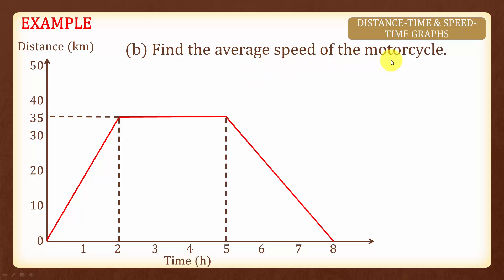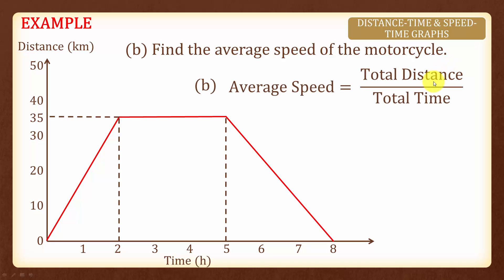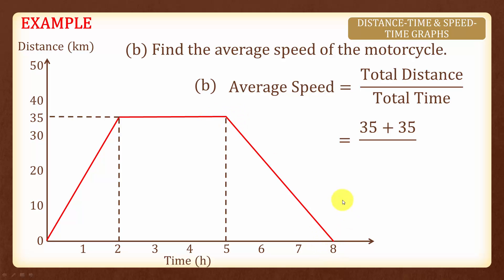Next, we are asked to find the average speed of the motorcycle. The formula for average speed is total distance divided by total time. The total distance for this graph: it travels 35 km, rested, and travels 35 km back to the original point. Therefore, the total distance is 35 plus 35. The total time taken was 8 hours, and the average speed is 8.75 km per hour.